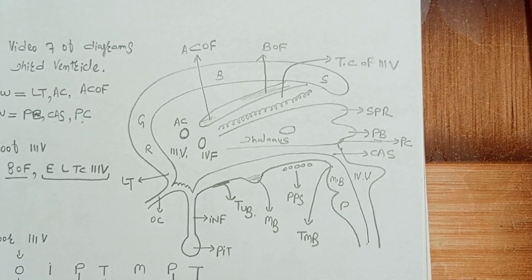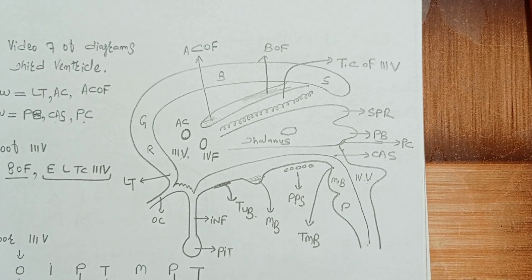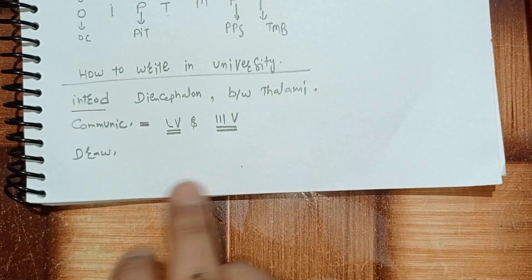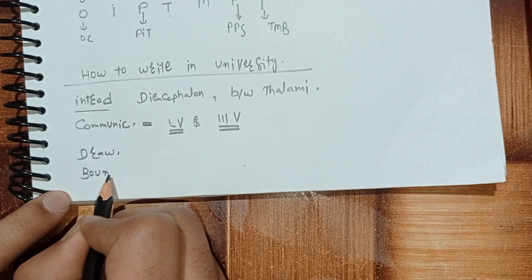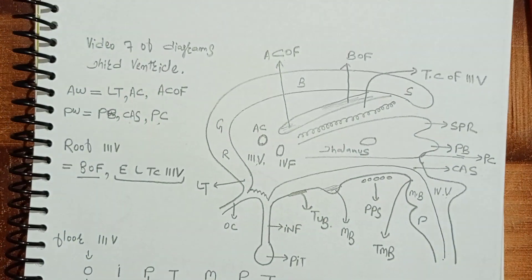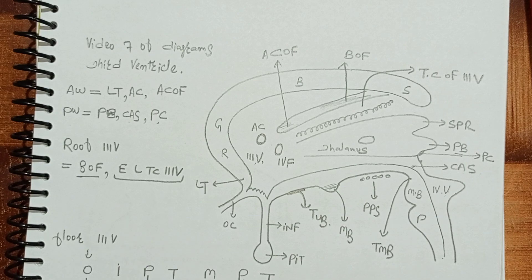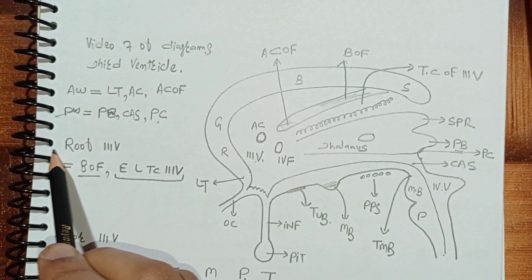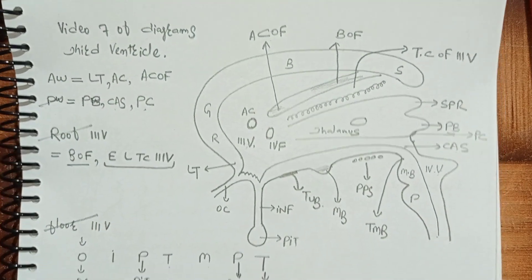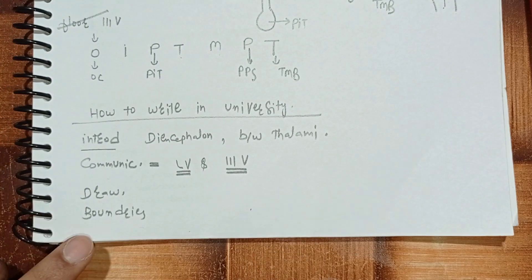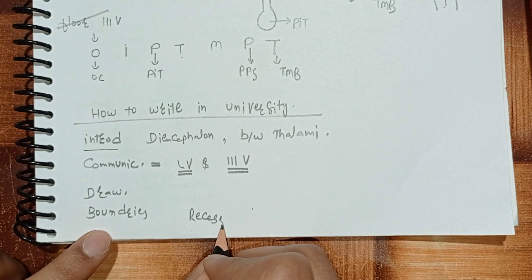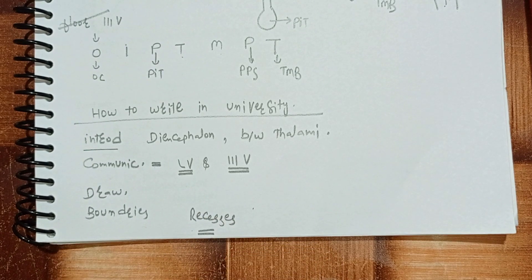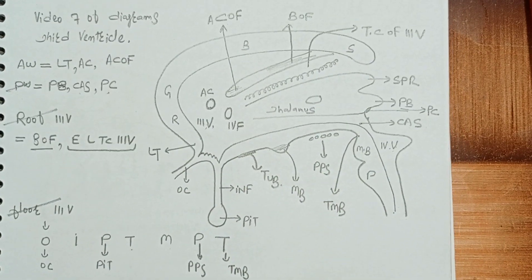After writing the communications, you will draw a neat and good diagram with a little bit of color. After drawing this diagram, you will write the different boundaries — the structures that form the anterior wall, the posterior wall, the roof, and the floor of the third ventricle. After writing about the boundaries, you will write about the recesses. Recesses are the extensions of any cavity, so the extensions of the third ventricle are called the recesses of the third ventricle.